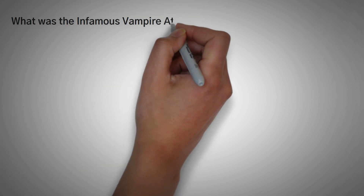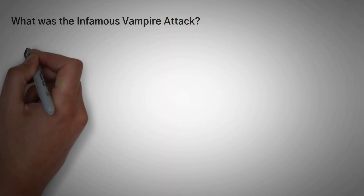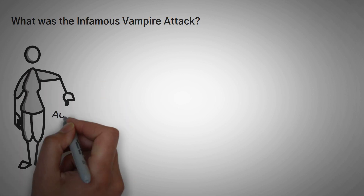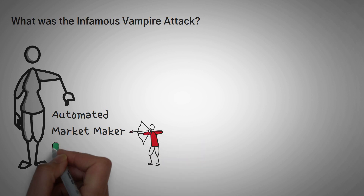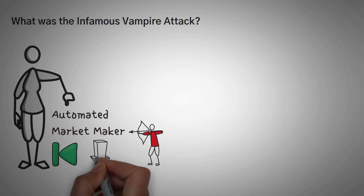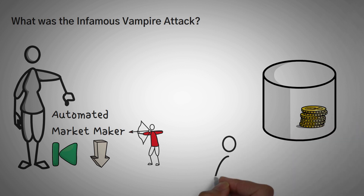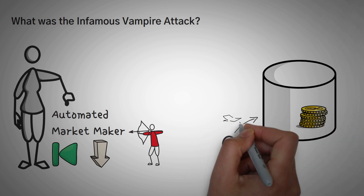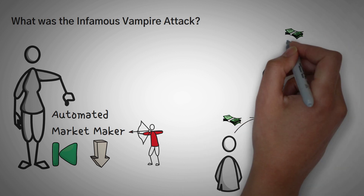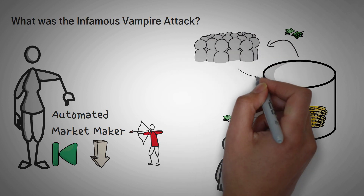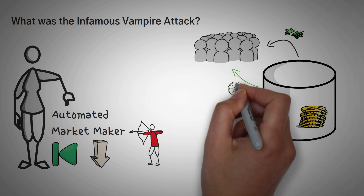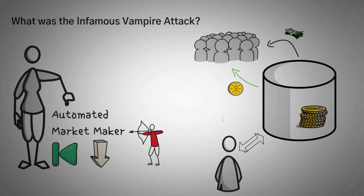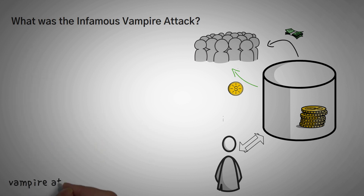What was the infamous vampire attack? Before we get into talking about SushiSwap, it's important that you understand what an automated market maker is, because that's essentially what is getting attacked. You can watch our video on that with the link in the description below. Essentially, these are pools of money that allow traders to trade. The traders pay a very small fee that goes to the investors who supply the initial amount of money, creating a win-win situation — investors earn rewards while traders get to trade without finding someone else to trade with.